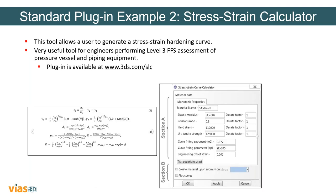The next one is the strain calculator plugin, which is also very useful for level three fitness-for-service assessments. On the left-hand side, you can see a very complex type of material behavior. This plugin has all these calculations embedded in it. All you need to do is specify simple parameters — elastic modulus, Poisson's ratio, hardening factor — and the plugin will generate a stress-strain curve and the material model for you. Again, it's very fast and simple to use.